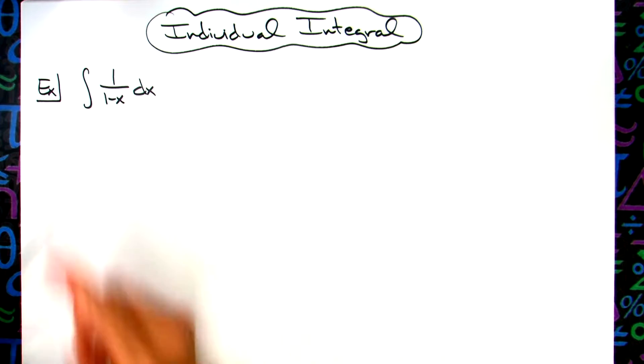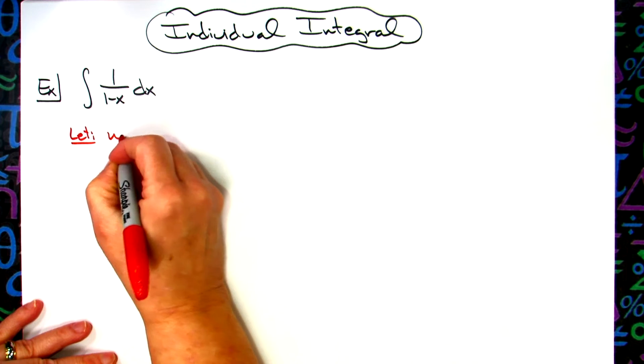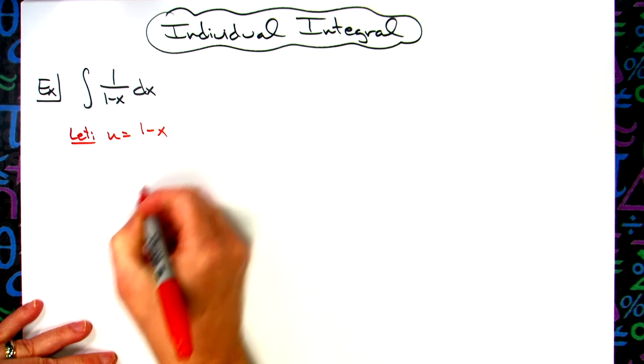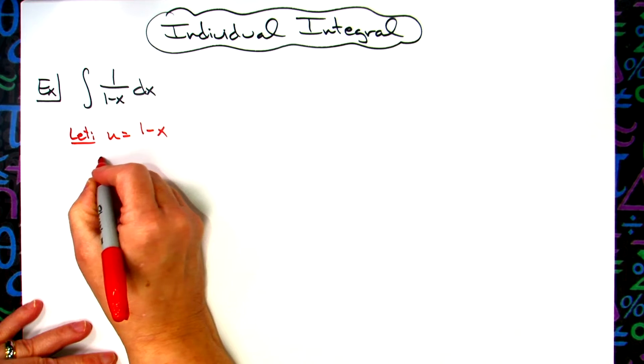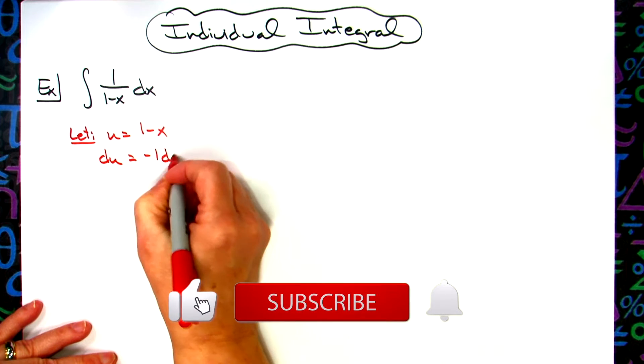We're going to start by setting up our u-substitution and we're going to let that u be the denominator. So we're going to let u equal that 1 minus x. Then I'm going to take the derivative of both sides. We'll have du is equal to a negative 1 dx.